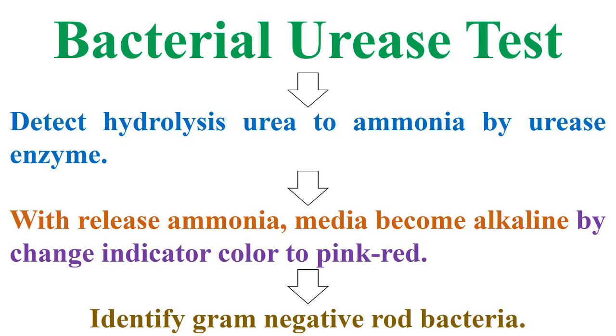Therefore, with the release of ammonia, the media becomes alkaline, indicated by a change in indicator color to pink-red. So, this method is used to identify gram-negative rod bacteria.